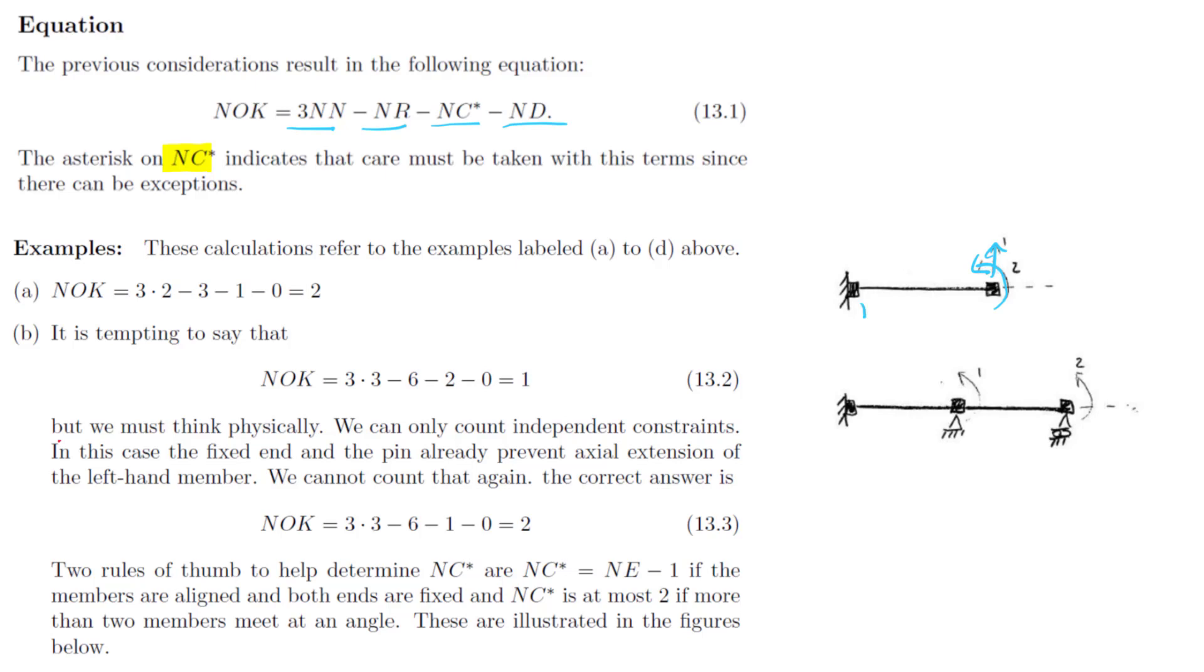We have one node and one node, that's two nodes, three restraints from the fixed end, one axial constraint, and no reductions. A reduction would mean that we chose not to count the rotation at that node. And indeed this equation gives us NOK of 2.